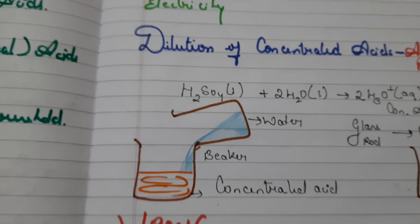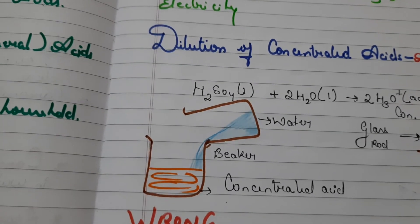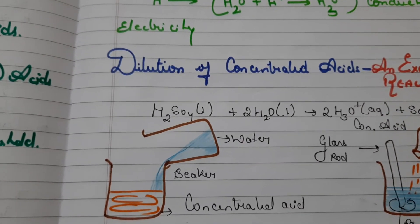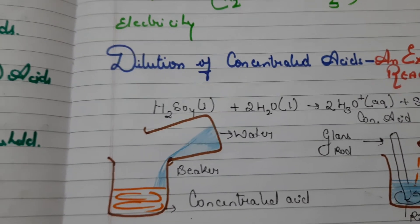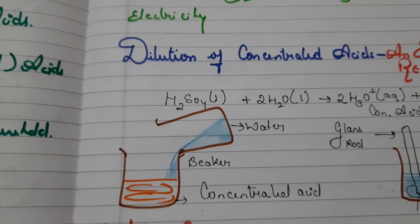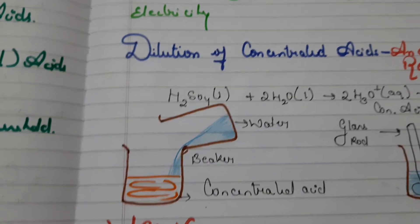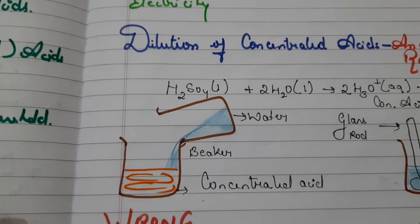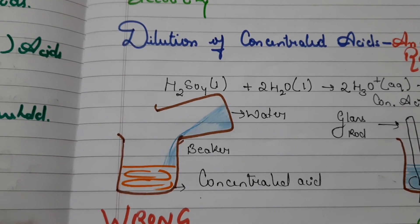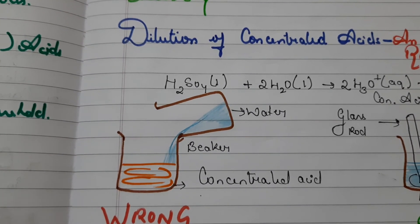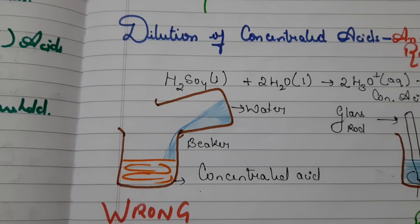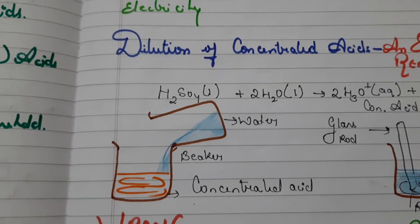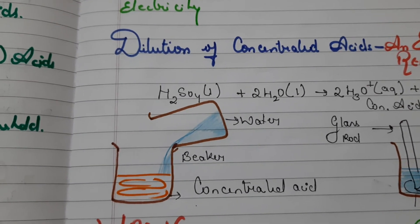Some children ask about acidity caused by excess acid production in the stomach, as we studied in the Life Processes chapter. We use antacids to neutralize this excess acid. This is done just for the purpose of neutralization.